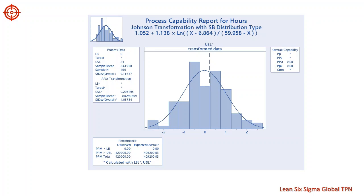Using the Johnson transformation, the capability analysis shows that the delivery time is within 24 hours. The capability results in a PPK of 0.08, which does not meet the general acceptance guideline of 1.33. So this process is not capable of meeting specification.